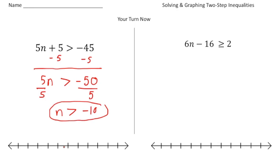To graph this, I'm going to put negative 10 right here. Negative 9 will be to the right, followed by negative 8, and negative 11 and negative 12 on the left. Since n is greater than negative 10, this is going to be an open circle, and we shade all the values to the right of the open circle.